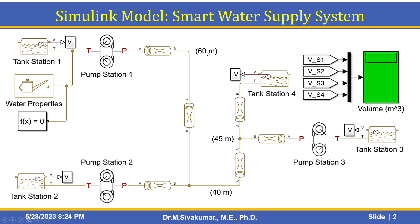The heights are mentioned here. Pump station 1 is at 60 meters, the second one is at 45 meters, and the third one is at 40 meters height. This scope represents the steady state flow rate for each location. Water properties, pipes, pump stations, and fluid properties are all available from the MATLAB Simulink SimScape Fluid Toolbox, where you can design the Simulink model for this project.